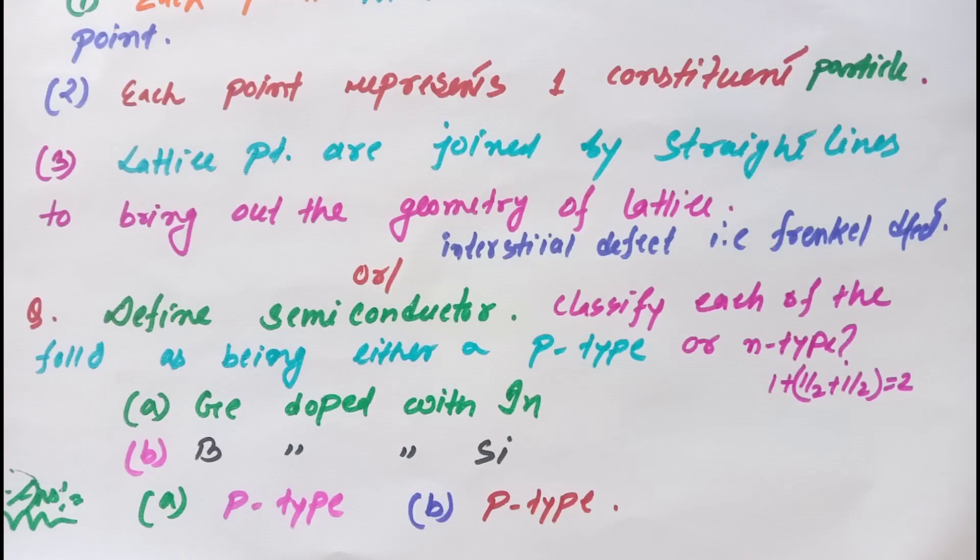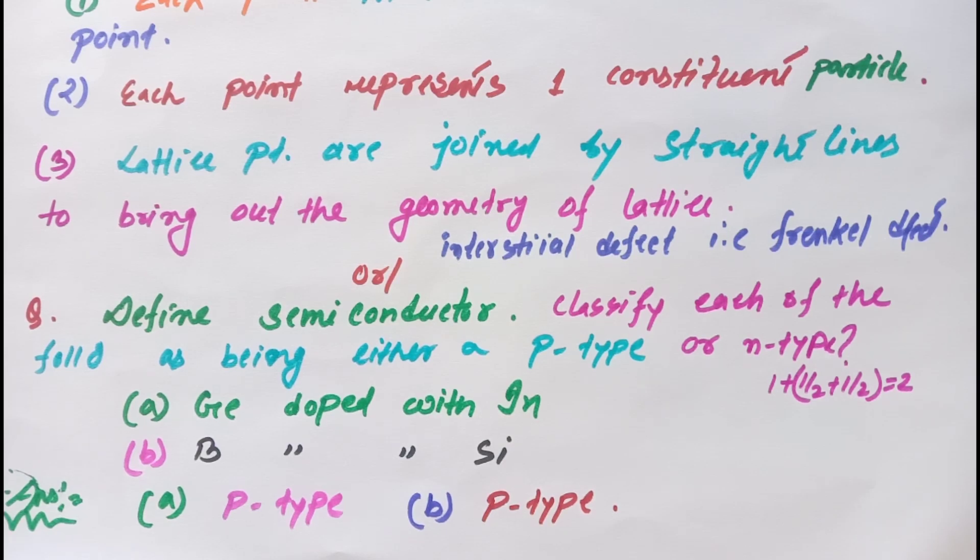See the next question: Define semiconductor. Classify each of the following as being either P-type or N-type: when germanium is doped with indium, and boron doped with silicon. When germanium is doped with indium, we get P-type semiconductor. And when boron is doped with silicon, we get again P-type semiconductor because in this case Group 14 elements are doped with Group 13 elements.